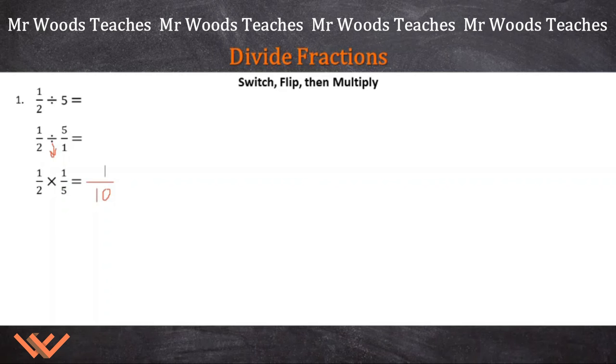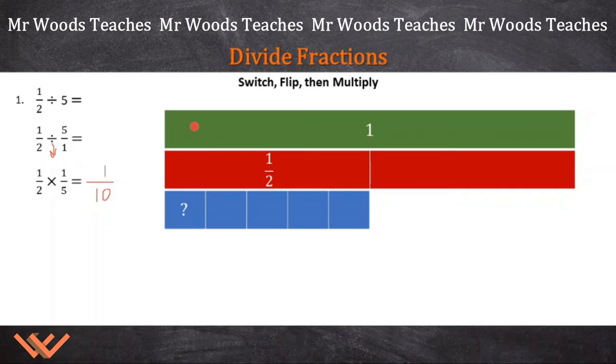But wait, how can we model this? Let's take a look. So we have one whole here, and then we have 2 halves. So this is 1 half. We're trying to figure out what one piece of this. This is going to be 1 half divided by 5, right? And right here, what is this? Well, 1, 2, 3, 4, 5. Well, if we keep going this way, if there's 5 here, there's 5 there. So each one is equal to 1 tenth.